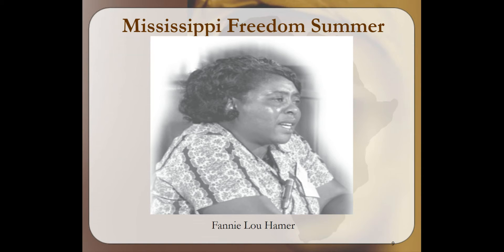The Council of Federated Organizations, along with other civil rights organizations, focused their attention on registering Black voters. African Americans were harassed, threatened, and discriminated against for exercising their right to vote. The Council of Federated Organizations asked white college students to help with voter registration efforts. The first day of Freedom Summer, three activists vanished and were later found dead.